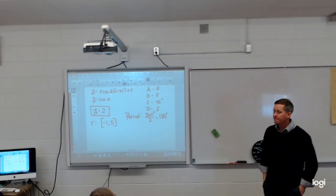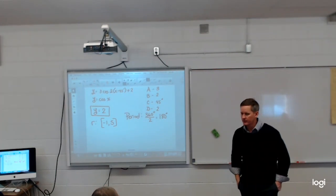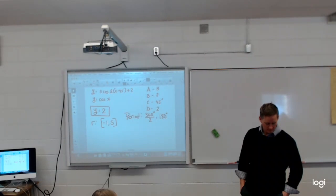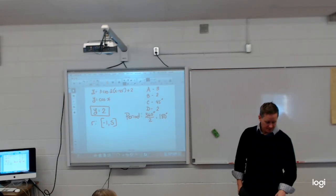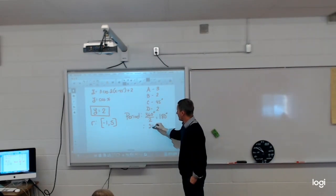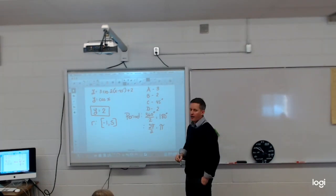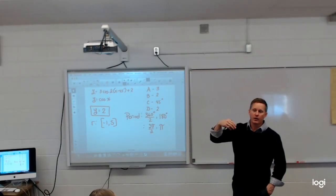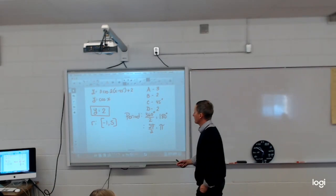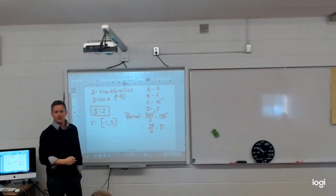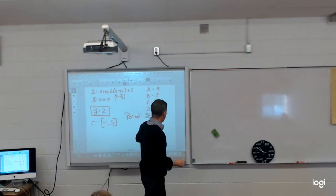So C equals positive 45 means it shifts right 45 degrees. If the question used radians, it would give pi over 4 instead of 45 degrees — because that's what 45 degrees is in radians. This would read x minus pi over 4, and to find my period in radians, I'd take 2 pi divided by B instead of 360 divided by B.